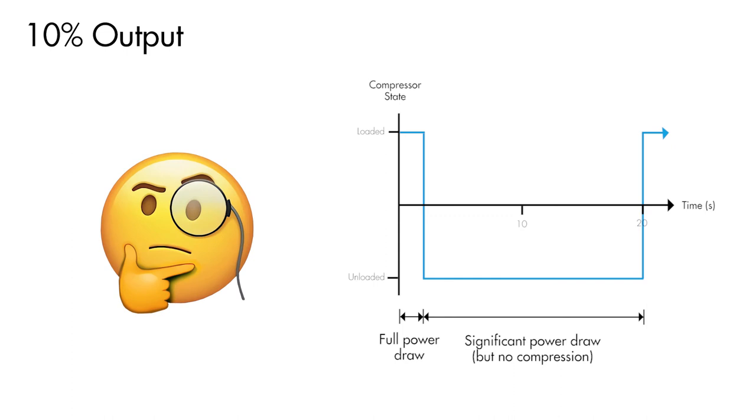In comparison, the fixed speed scroll compressor draws no electrical power during its off-cycles because the motor is simply switched off.